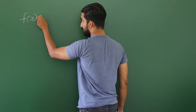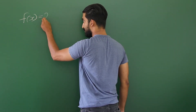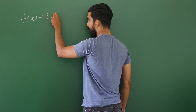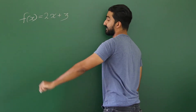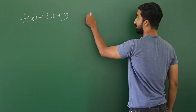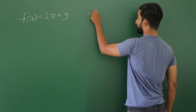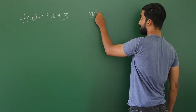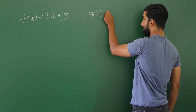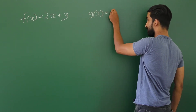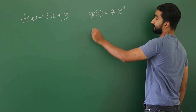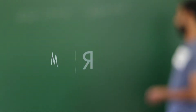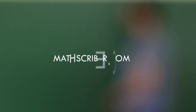f(x) equals 2x plus 3, and g(x) equals 4x cubed. Now, if you are supposed to find these values...